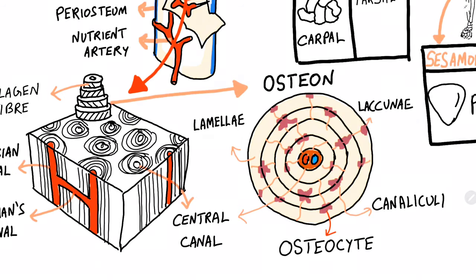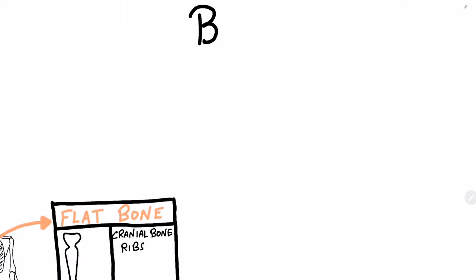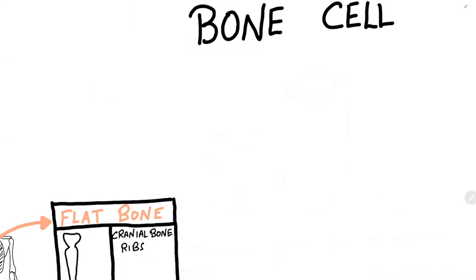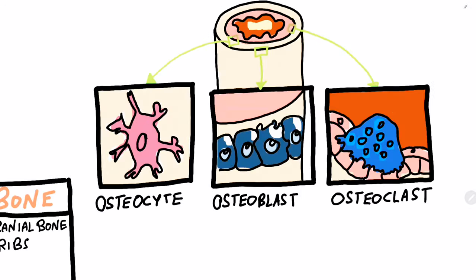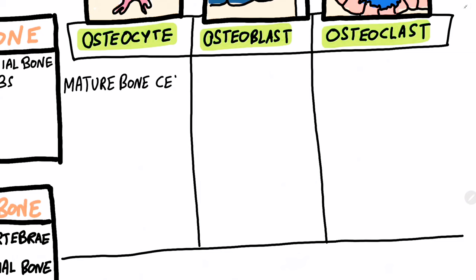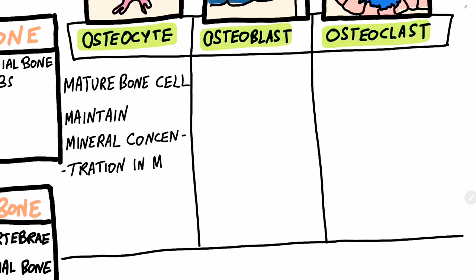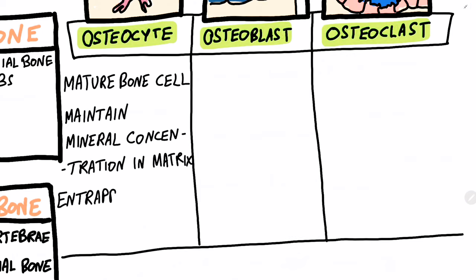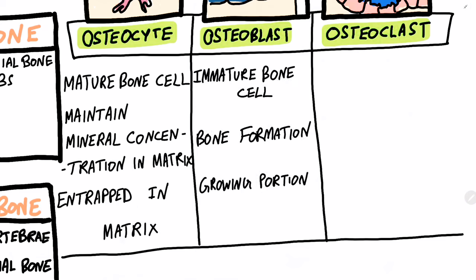Are osteocytes the only bone cells? The answer is no. Osteocytes are mature bone cells that maintain the mineral level inside the bone and also regulate bone metabolism. Osteoblasts, on the other hand, are immature bone cells that are primarily involved in ossification, which is bone formation. They secrete osteoid and get trapped, and after getting trapped they become osteocytes.